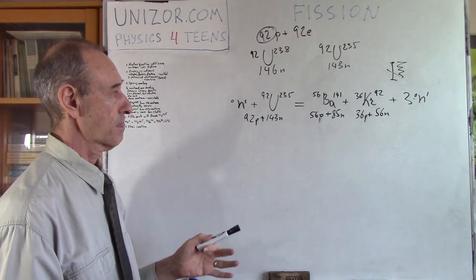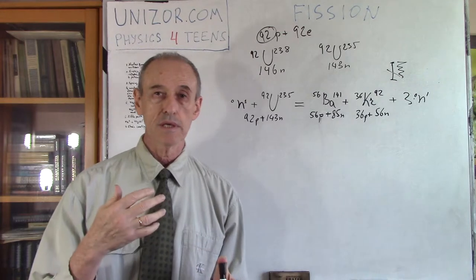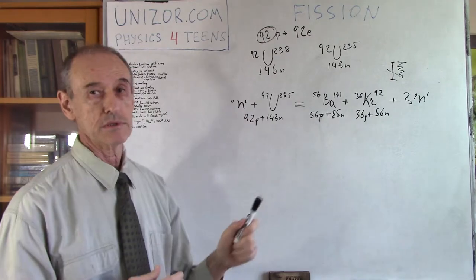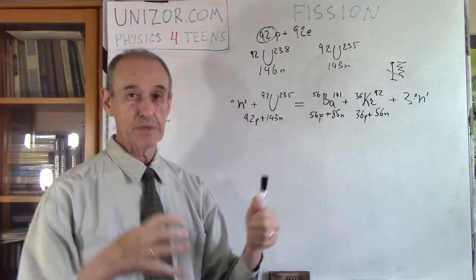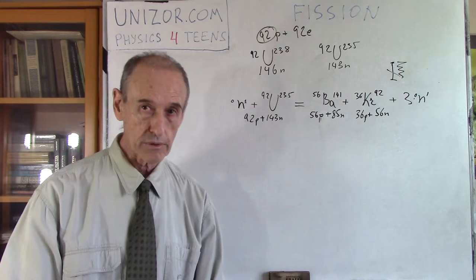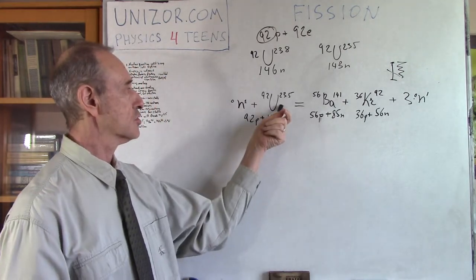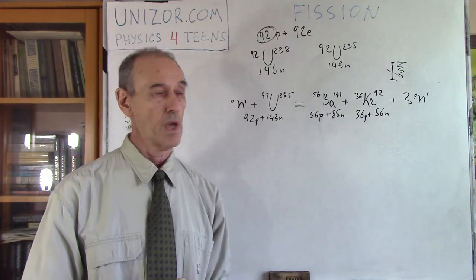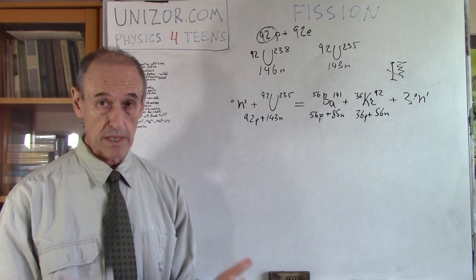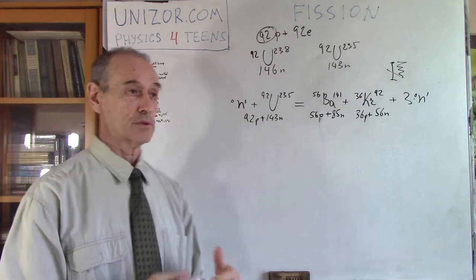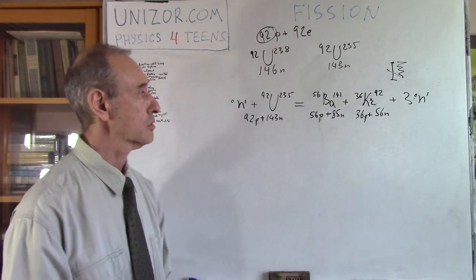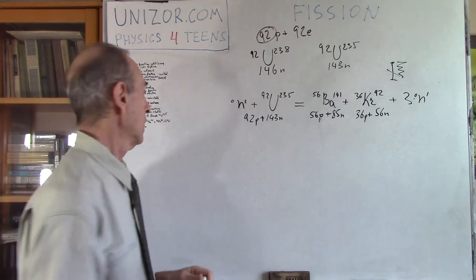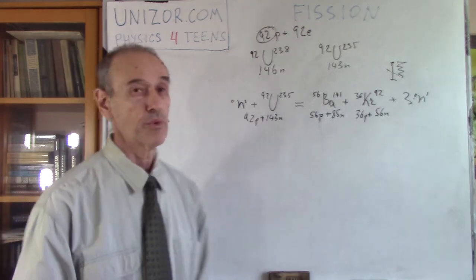That's what happens. The potential energy of the 92 protons separated into 2 big pieces is greater than the amount of energy needed to break the nucleus apart into the two smaller nuclei. As a result, we have a release of energy — and not only that, we have also released 3 more neutrons. And this brings up a very important consequence.